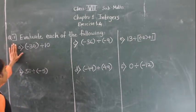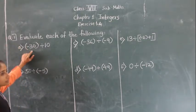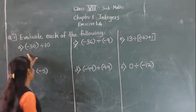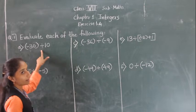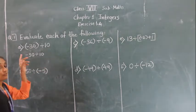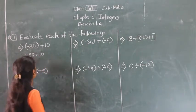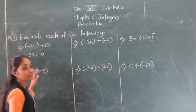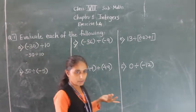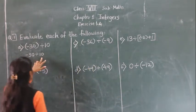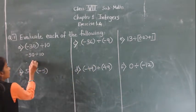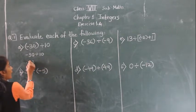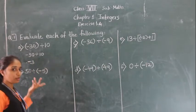Part (a): minus 30 divided by 10. When we divide a negative integer by a positive integer, we divide them as whole numbers. So, 10 threes are 30, and put a minus sign before the answer.